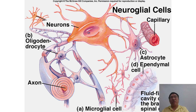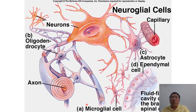We also have ependymal cells, which line the ventricular channels — they line the ventricles. Another type of glial cell is microglia, but these are pseudoglial cells because they are derived from mesoderm, from the bone marrow, not neuroectoderm like other types of cells. Microglia are responsible for immune surveillance of the central nervous system.